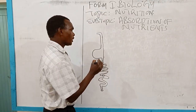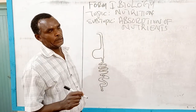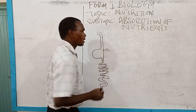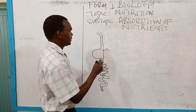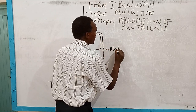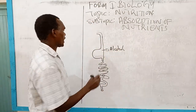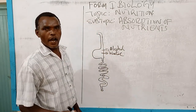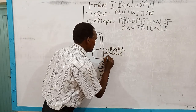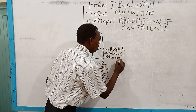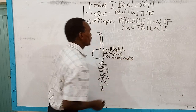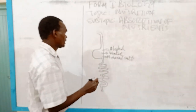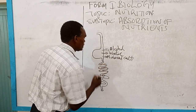So where does absorption take place? In the stomach, we have alcohol getting absorbed there. We also have water and mineral salts. These substances need not be digested — they are absorbed directly.